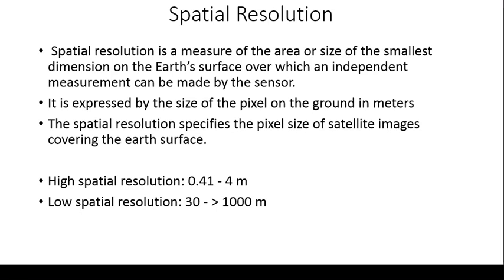The spatial resolution specifies the pixel size of a satellite image covering the earth's surface. If we have a high spatial resolution image, the pixel size varies from 0.41 to 4 meters. For low spatial resolution, the pixel size is 30 meters up to 1000 meters or more. High spatial resolution provides more clarity, showing more precise and clear images of the smallest dimensions. For land use or land cover classification, we can use low spatial resolution sensors with 30 to 1000-meter resolution.